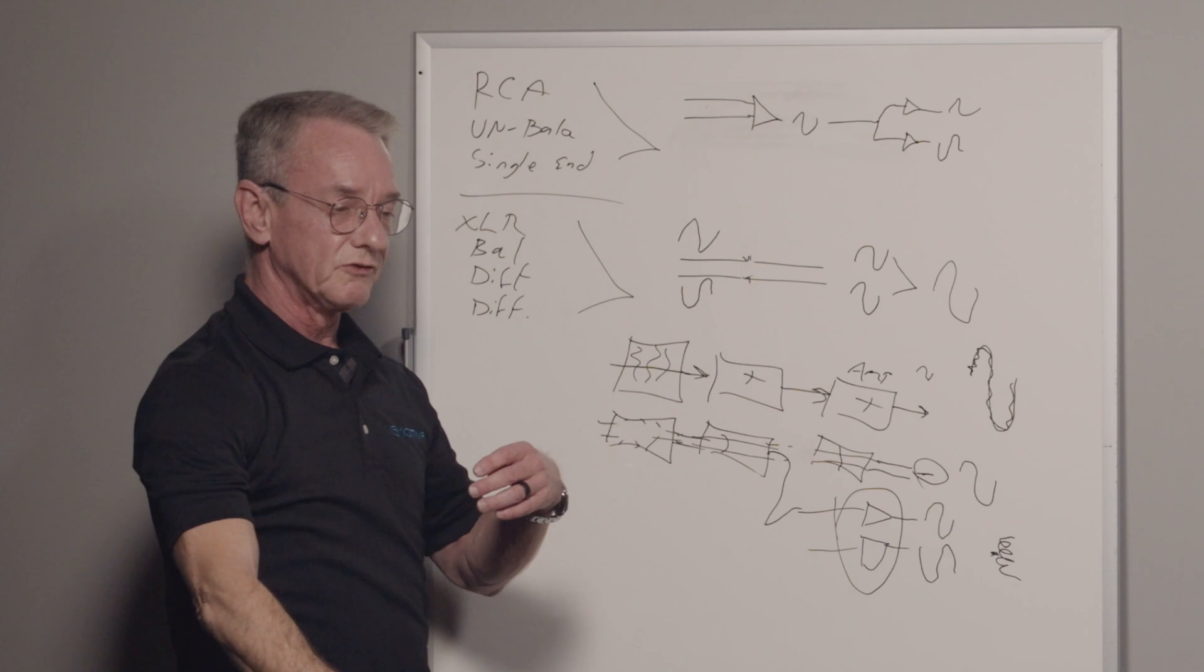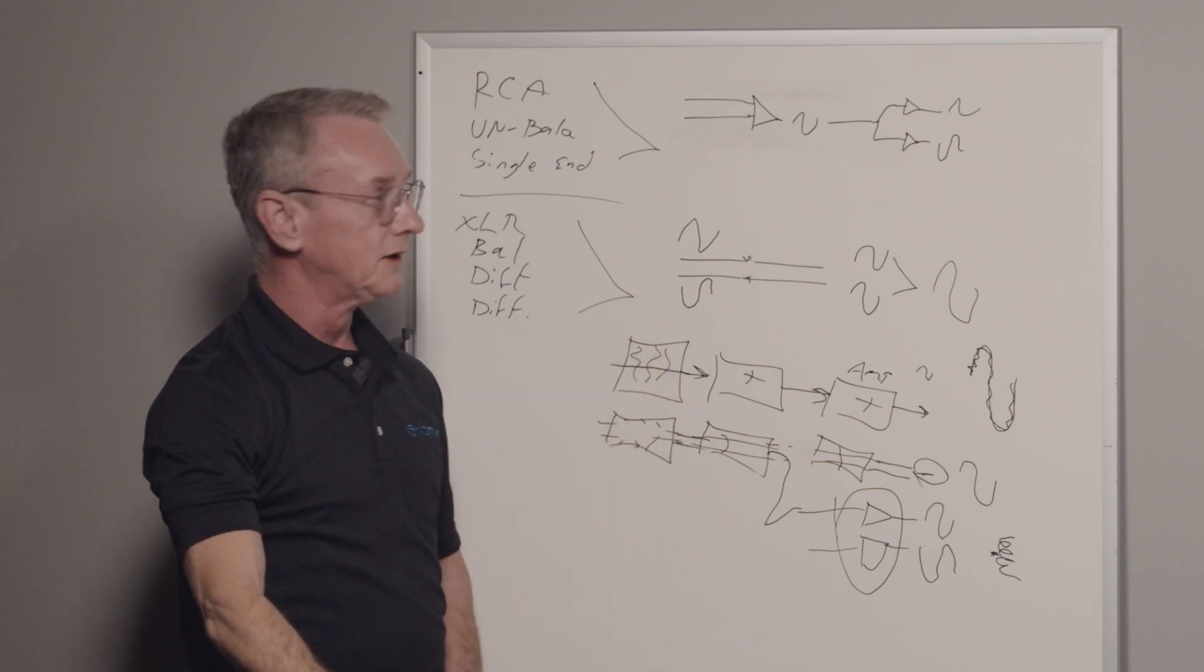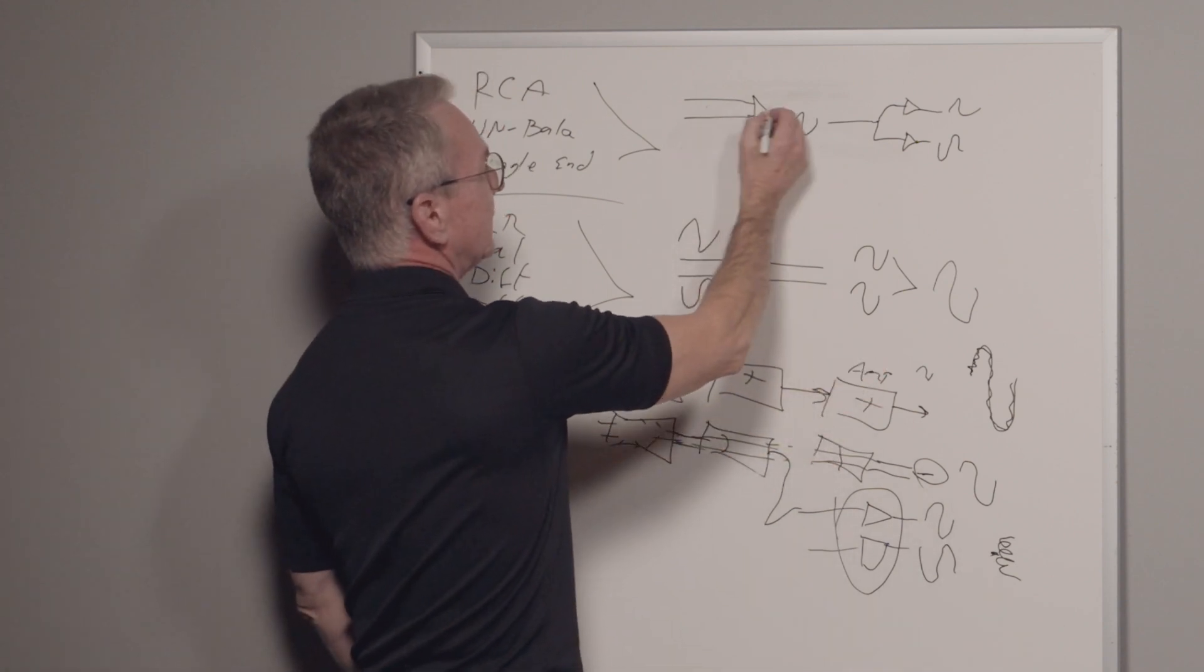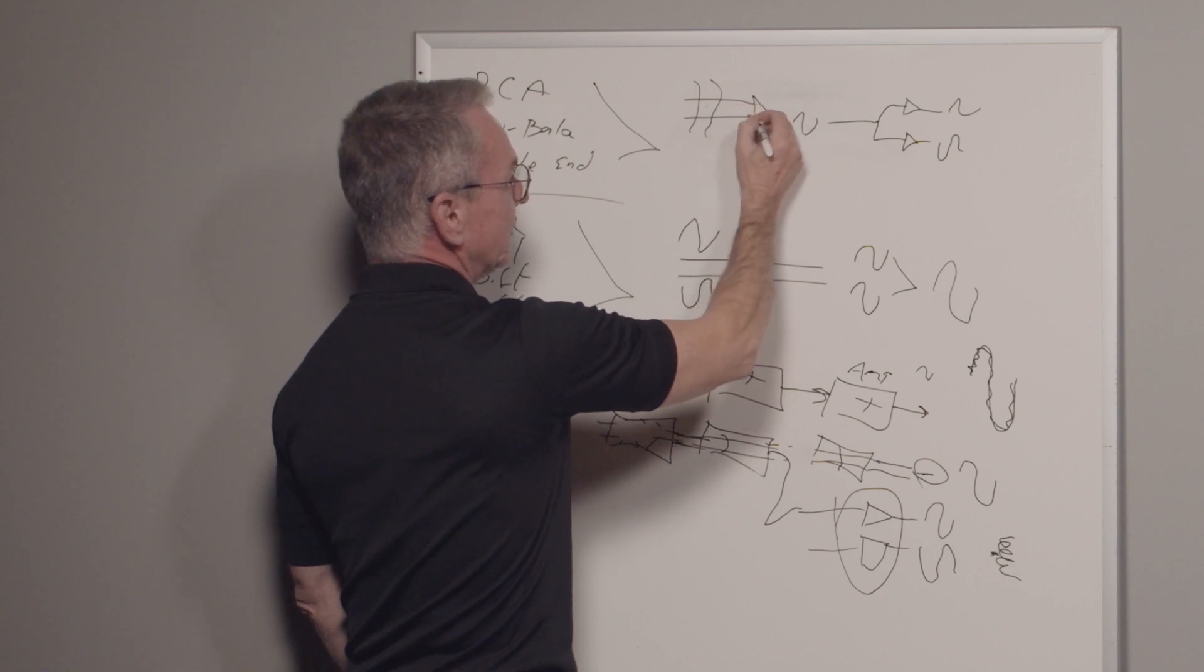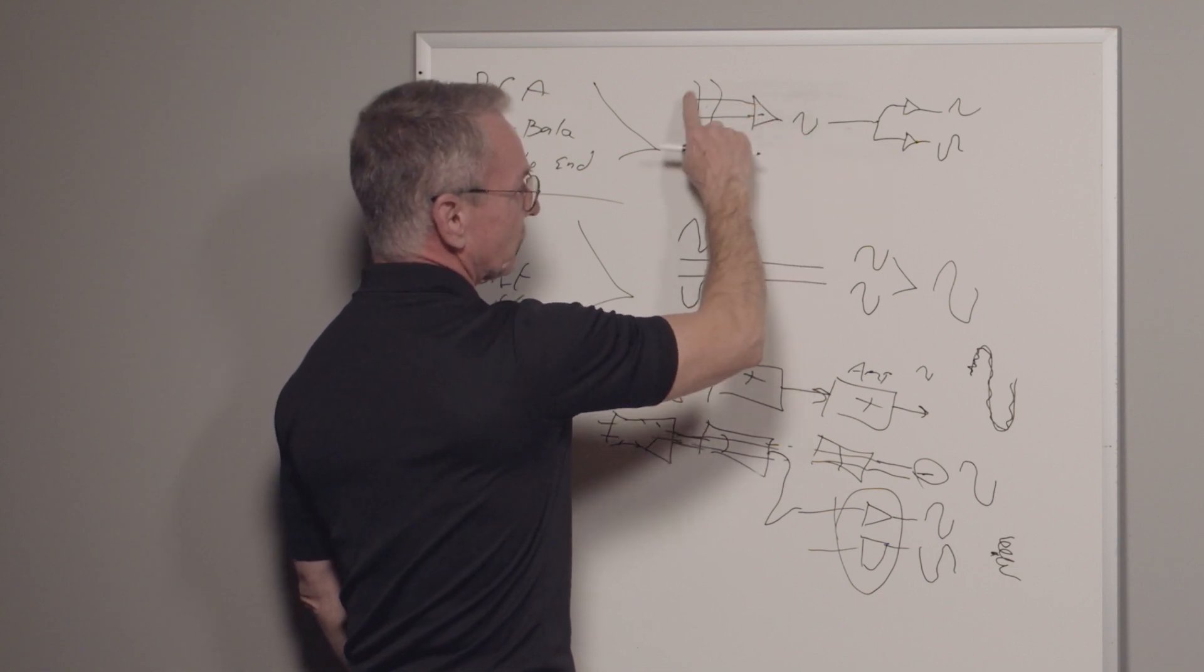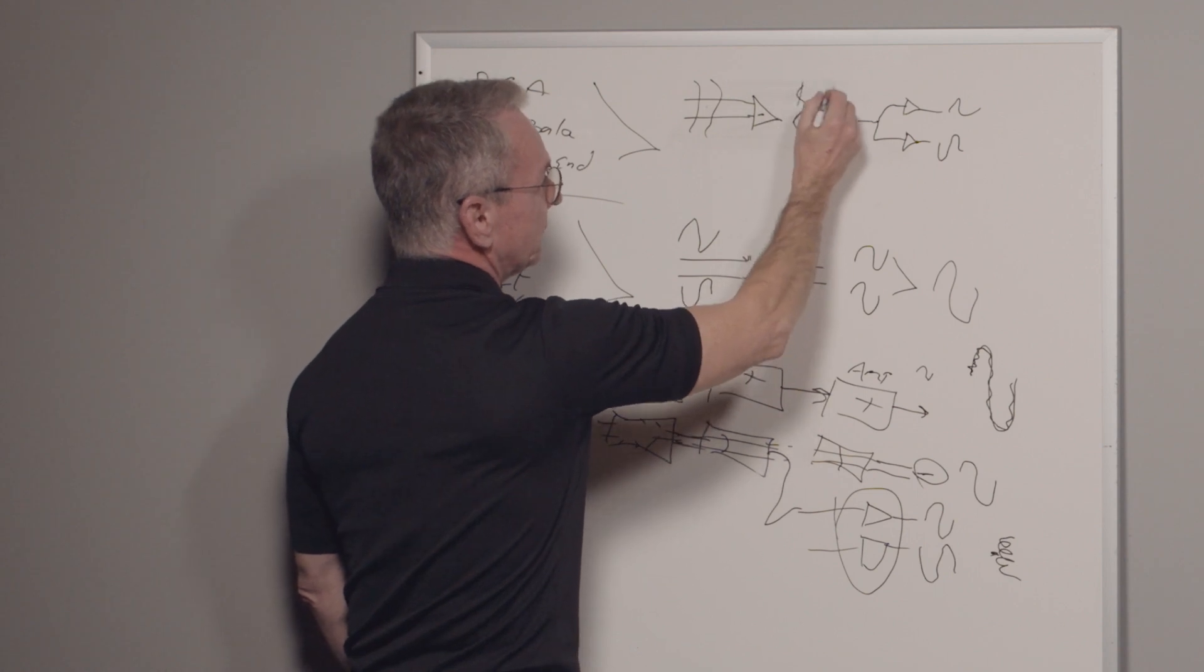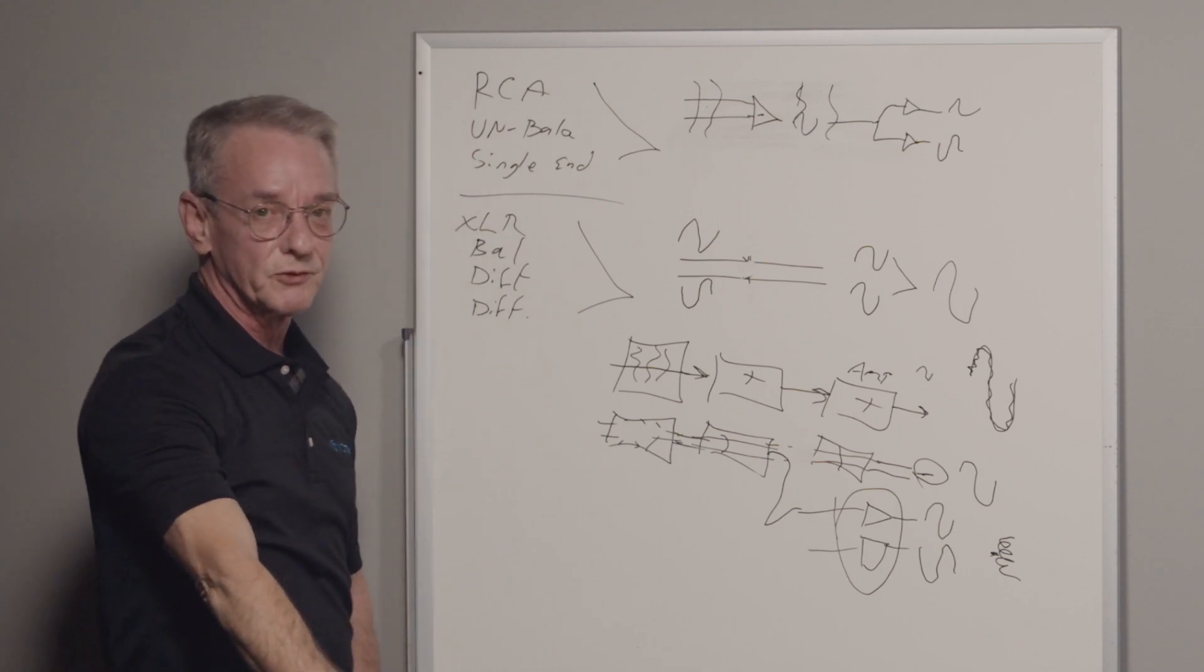Doing it like this where you come in balanced and then you make it look like balance going out is a cheap, easy way for companies to give you a quasi-balanced system. Now it has some benefits to it, whereas any noise picked up preceding to that gets cancelled here. So it is quieter going in, but any noise in the box itself just gets multiplied when it goes out. It doesn't ever get cancelled out at that point.